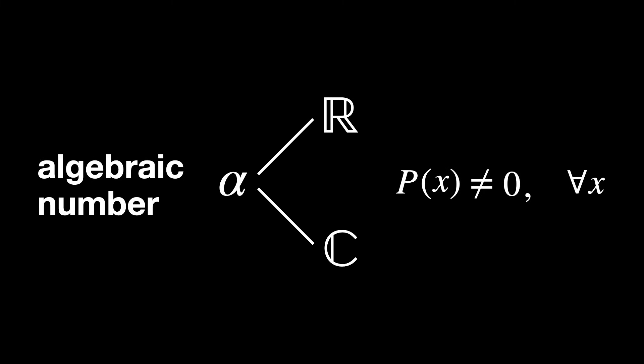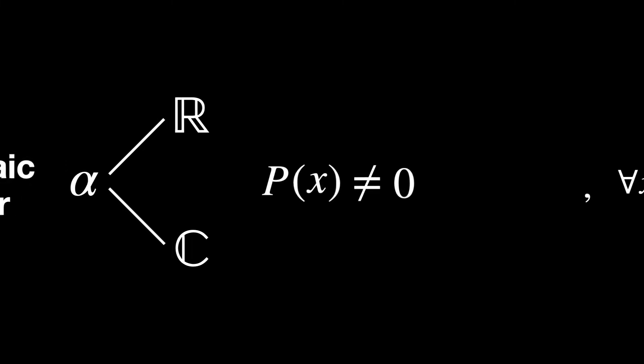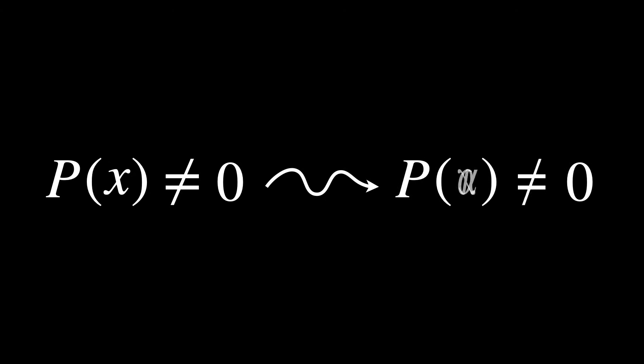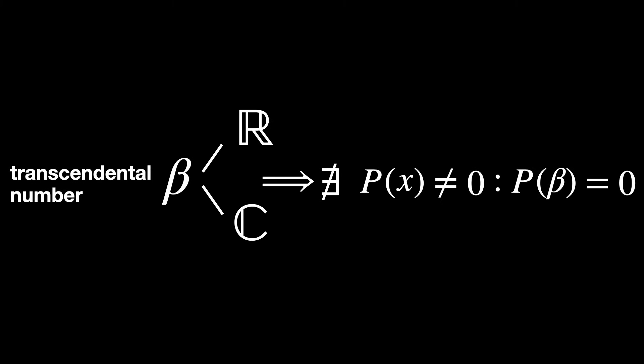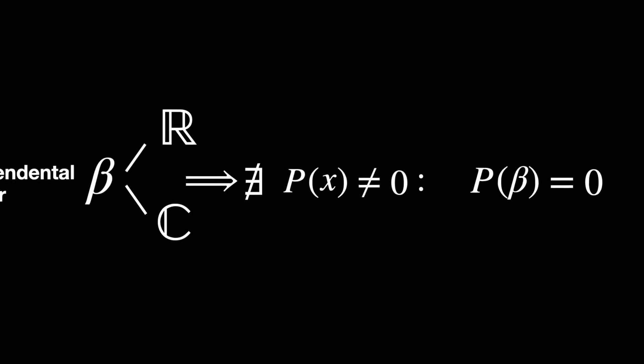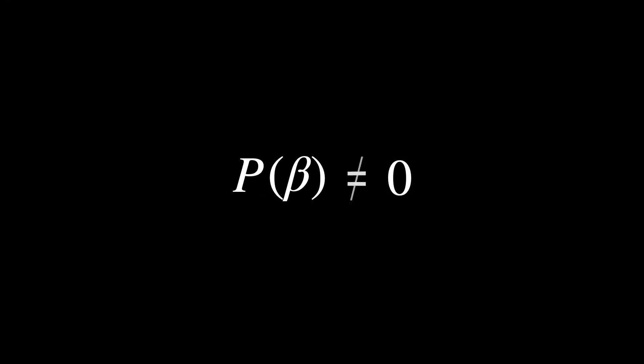The general definition of an algebraic number alpha is a real or complex number that is a root of some non-zero polynomial with rational coefficients, so p of alpha equals 0. A transcendental number is a number that is not algebraic. So if beta is a transcendental number, then no matter how creative you are, you will never be able to find a non-zero polynomial with rational coefficients such that p of beta equals 0 — p of beta is always different from 0.